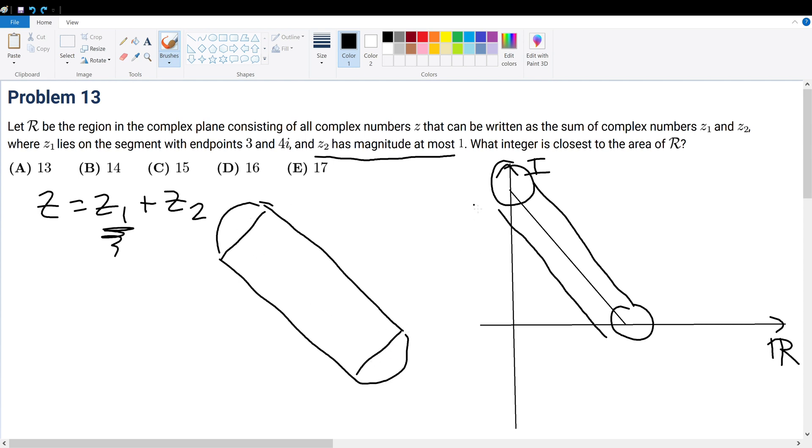Well, the area of a circle with radius 1 is easy because the area is πr², so this becomes π. That's the area of the first one.